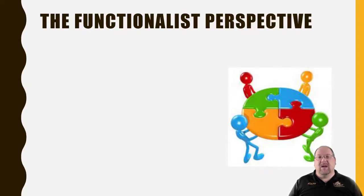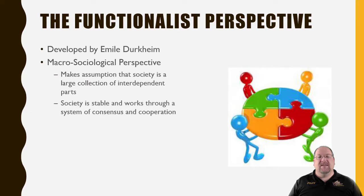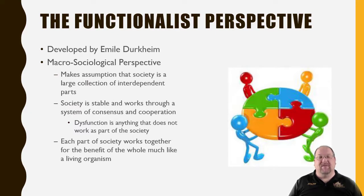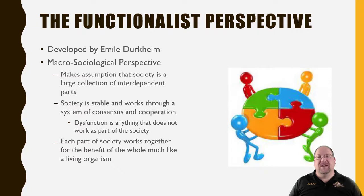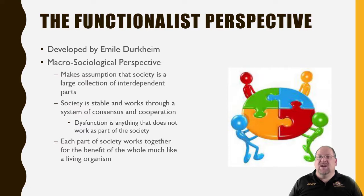The second perspective is known as the functionalist perspective, developed by Emile Durkheim. This is another macro perspective. He makes the assumption that society is a large collection of interdependent parts — many different things going on at the same time — and it is because of these different parts working simultaneously that allow society to function. He claims society is stable and works through consensus and cooperation.